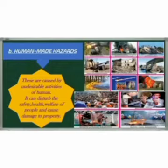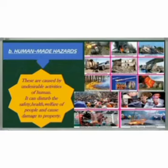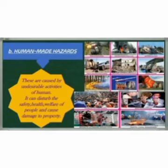Second, human-made hazards. These are caused by undesirable activities of humans. They can be the result of an accident such as an industrial chemical leak or oil spill, or an intentional act — that is, knowingly doing the activities. Such hazards can disturb the safety, health and welfare of people and cause damage or destruction to property. Some examples are explosions, hazardous waste, pollution of air, water and land, dam failures, wars or civil conflicts, and terrorism.